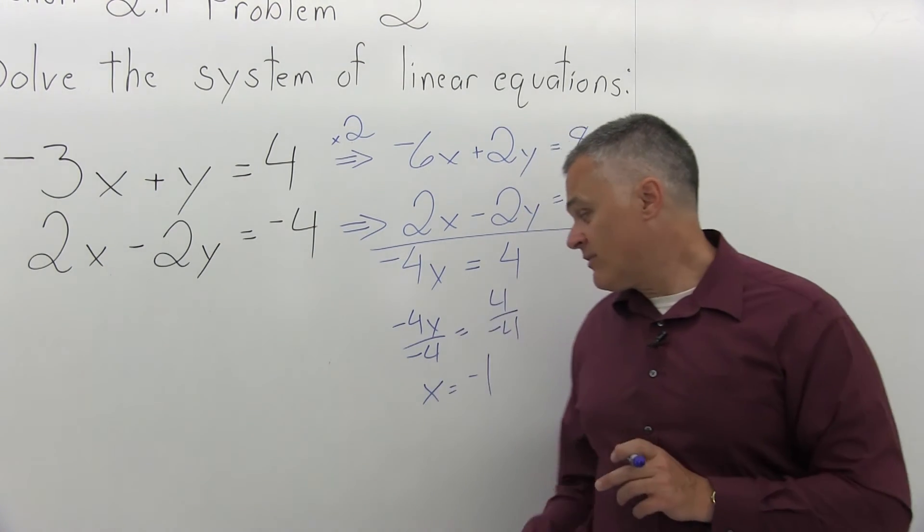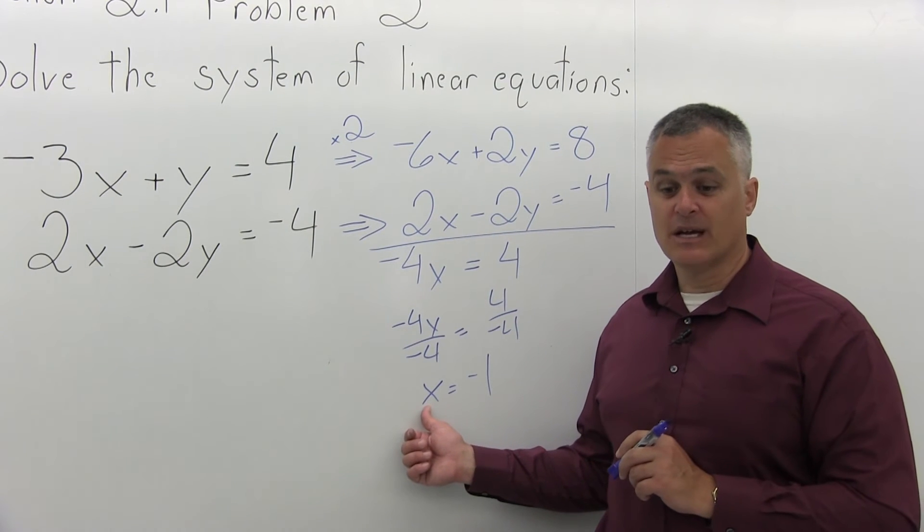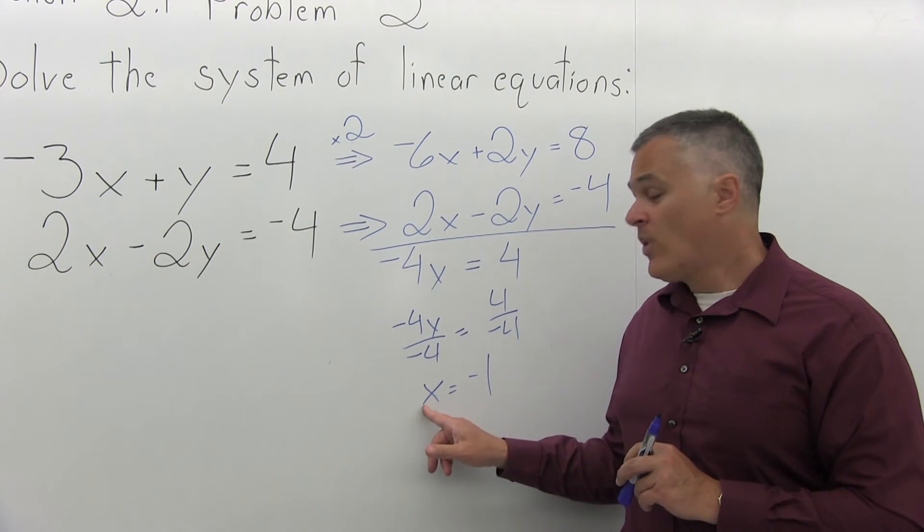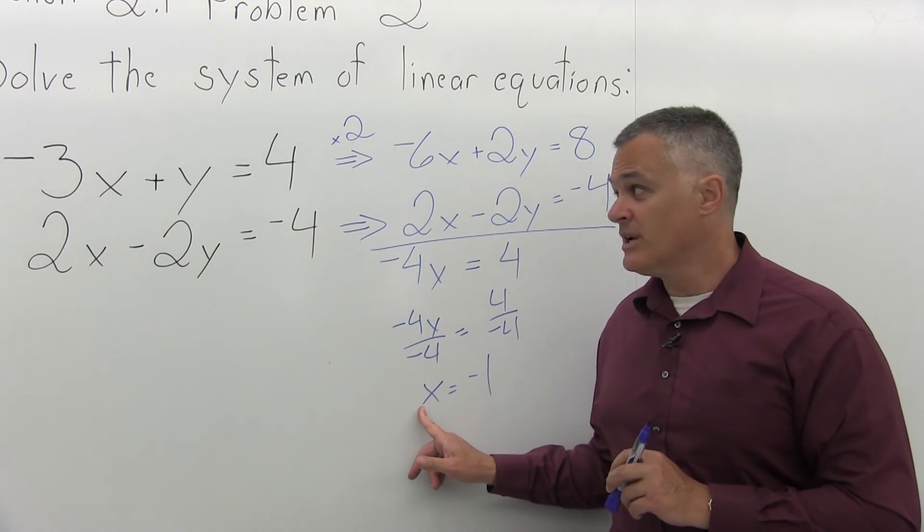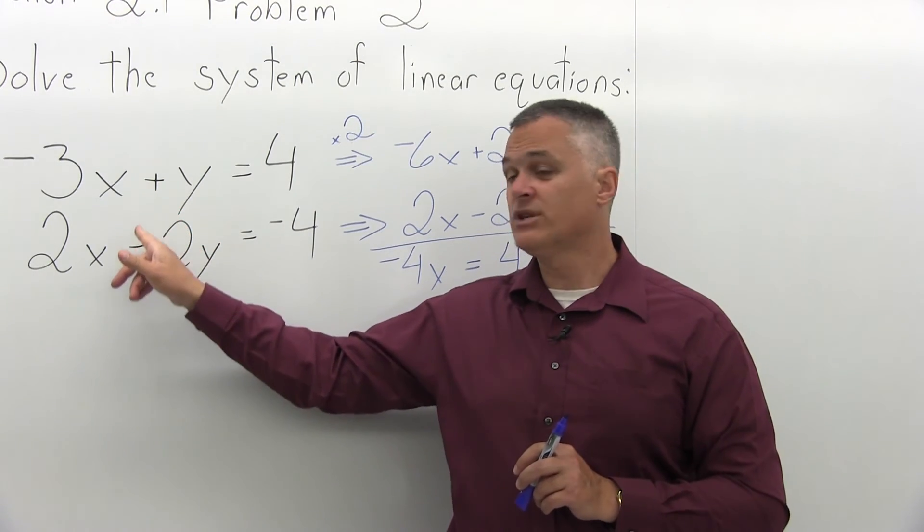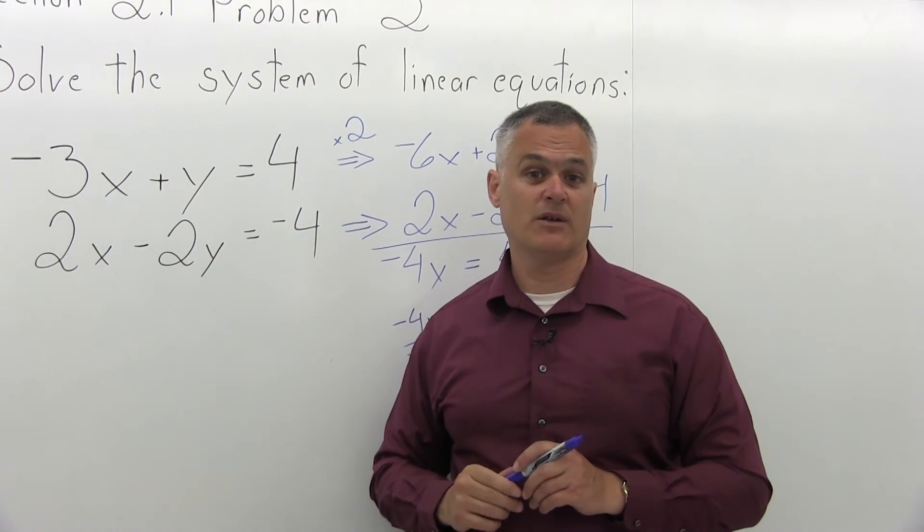So that's step three. Solve for the remaining variable and I did. And x is negative 1. Step four. Take the answer from step three and plug it back into either of the original equations and solve for the remaining variable.